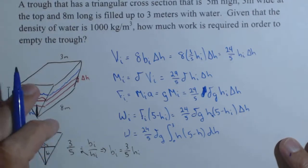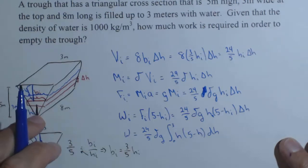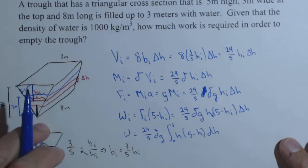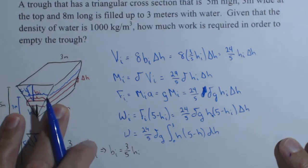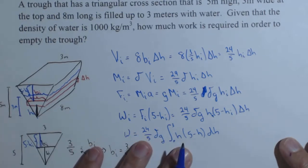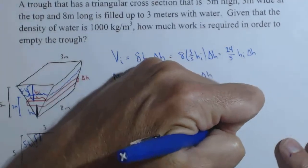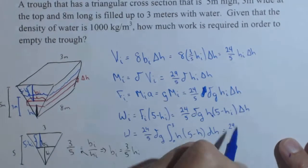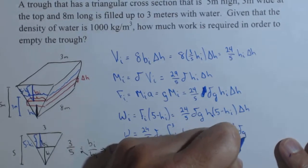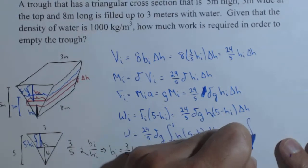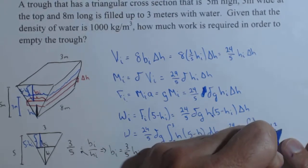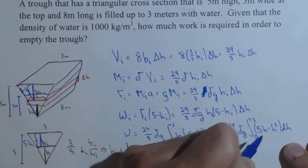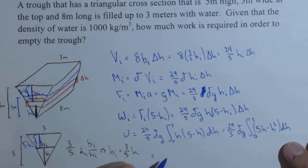Now, to contrast this, you may have defined H to be from the top. And then, you would have had to go from 2 to 5. So how you set up your diagram determines how your integrand and limits are going to look. So we have 24 fifths delta g, the integral from 0 to 3 of 5H minus H squared dH. Again, not a bad integral at all.